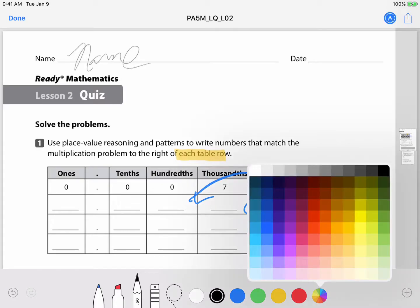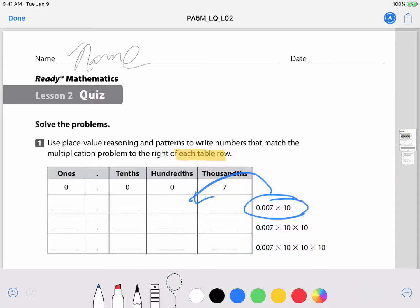Over here I have the color wheel. I can select any of these colors to use and I also have a lasso tool. So if I want to lasso something and move it around I can do that. And finally I have an erase tool where I can just tap on things to erase that.